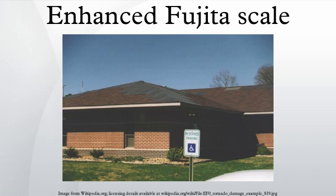Twenty-eight damage indicators, with descriptions such as double-wide mobile home or strip mall, are used along with degrees of damage to determine wind estimates. Different structures, depending on their building materials and ability to survive high winds, have their own damage indicators and degrees of damage. Damage descriptors and wind speeds will also be readily updated as new information is learned. Since the new system still uses actual tornado damage and similar degrees of damage for each category, the National Weather Service states that the new scale will likely not lead to an increase in the number of tornadoes classified as EF-5. Additionally, the upper bound of the wind speed range for EF-5 is open-ended — there is no maximum wind speed designated.